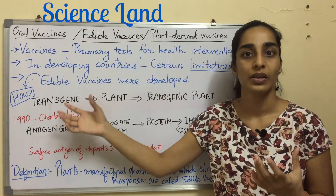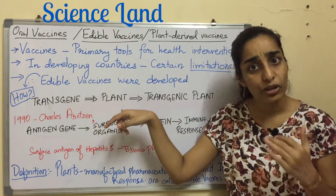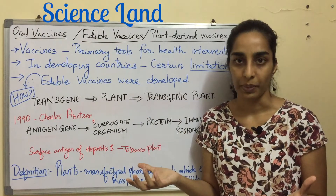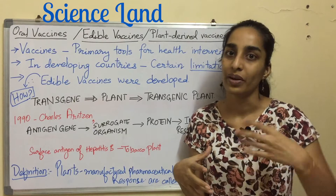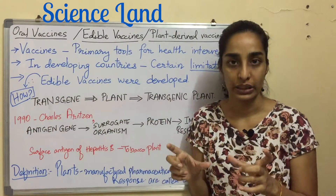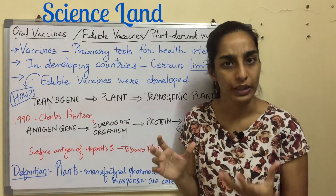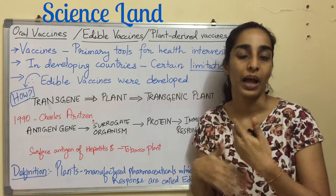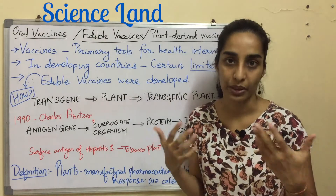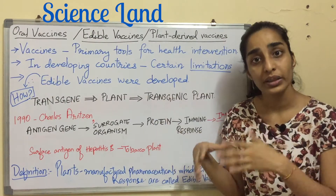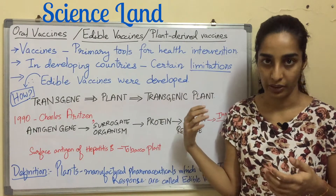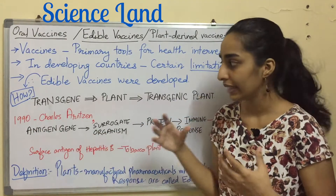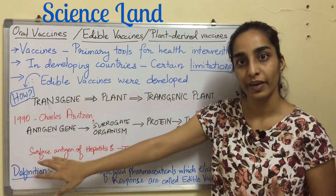There was this concept of incorporation of a transgene into a plant to produce a transgenic plant. Plant biologists already knew that if you take a gene of interest and incorporate it into the plant genome, the plant would essentially start producing that particular product. This altered plant is known as a transgenic plant.